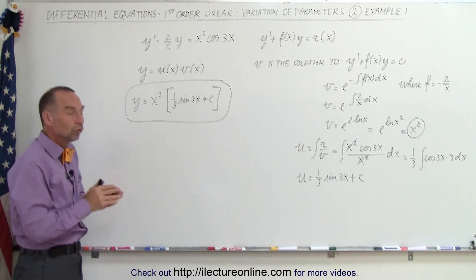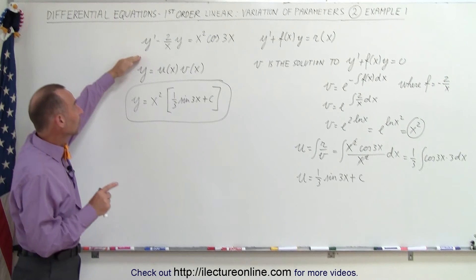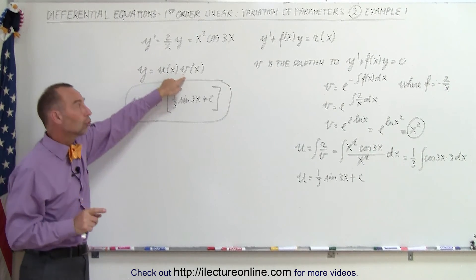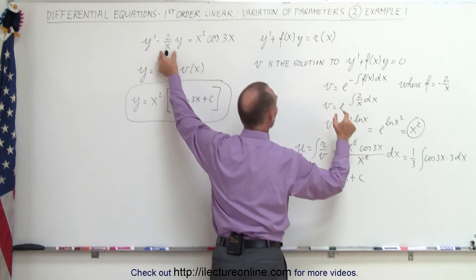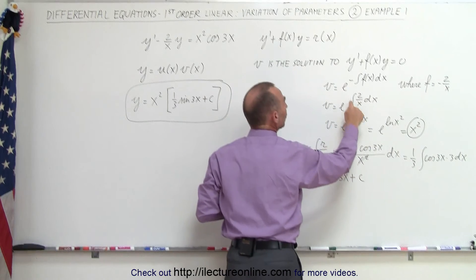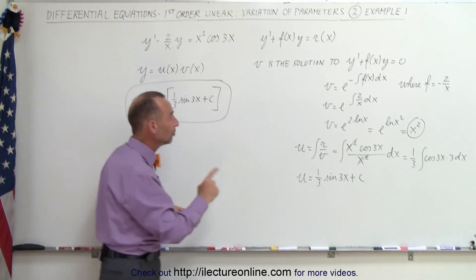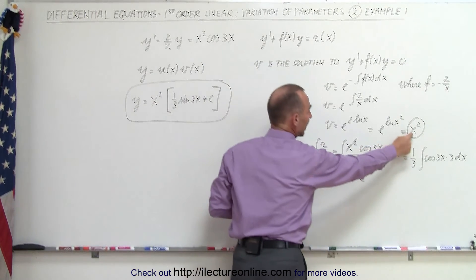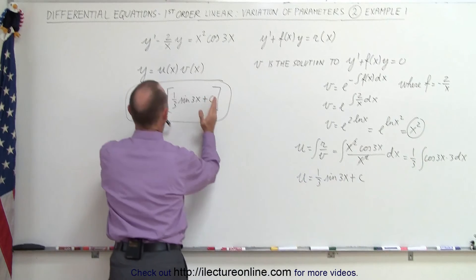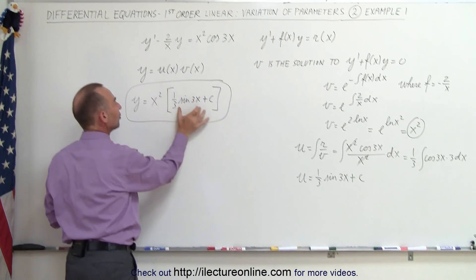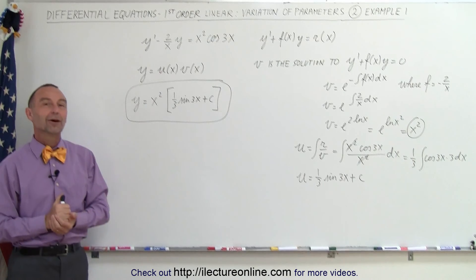How did we find the solution using the method of variation of parameters? The solution to a linear first-order non-homogeneous differential equation can be written as the product of u times v, where v is the solution to the homogeneous part, equal to e to the minus integral of f of x dx. Here f is minus 2 over x; plugging that in, the minuses cancel and we integrate to get v equals x squared. To find u, we integrate r divided by v — r was x squared cosine of 3x, v was x squared, the x squareds cancel, and integrating gives u equals 1 third sine of 3x plus a constant. Writing v first and u second gives the full solution, and that's how it's done using the method of variation of parameters.